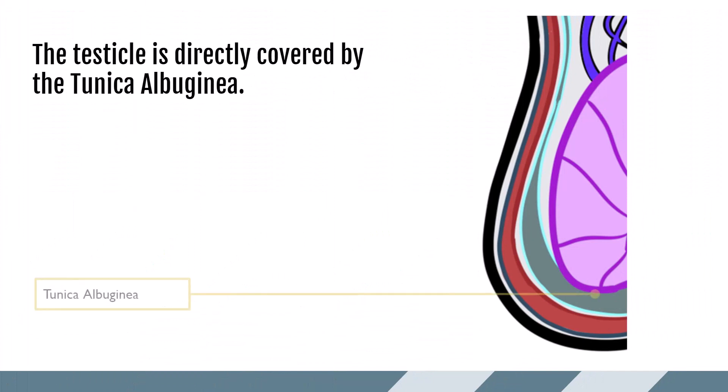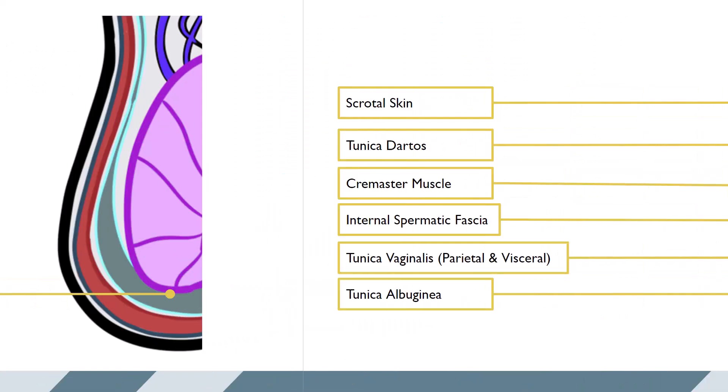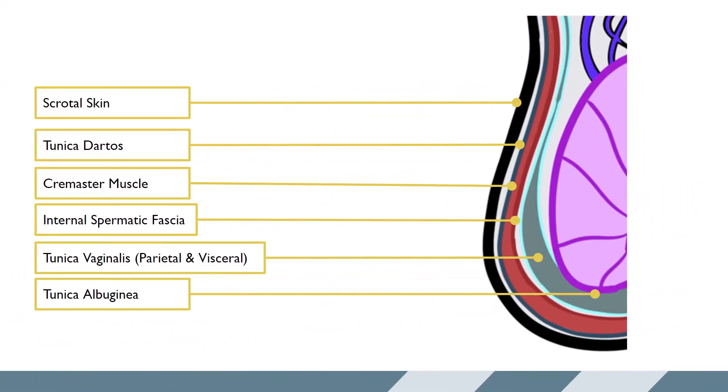Another layer called the tunica albuginea covers the testicle itself. This is made of a dense fibrous tissue that extends into the testicle. So again, from outer to inner we have the scrotal skin, the tunica dartos, the cremaster muscle, internal spermatic fascia, the tunica vaginalis parietal layer, then the visceral layer, and finally the tunica albuginea.